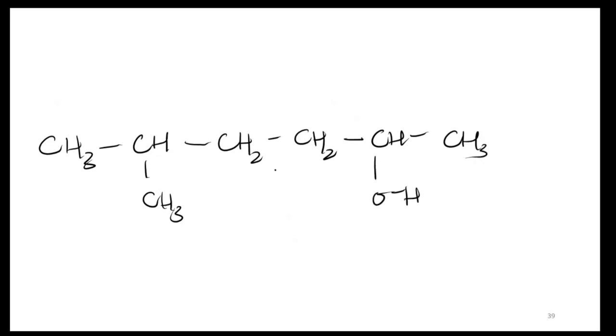After that, the next compound: CH3-CH-CH2-CH2-CH2-CH3 with OH here. So numbering: 1, 2, 3, 4, 5, 6. And what will happen to the name? 5-methyl Hexane-2-ol. So this is the name. These were some examples of naming alcohols.